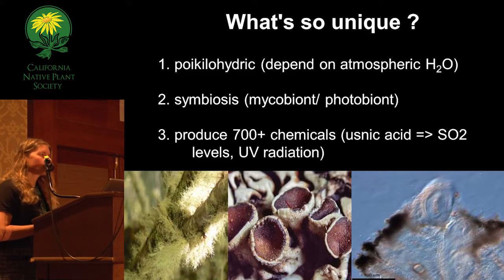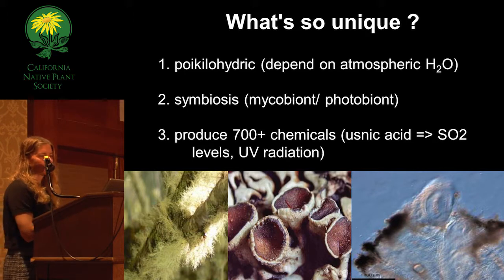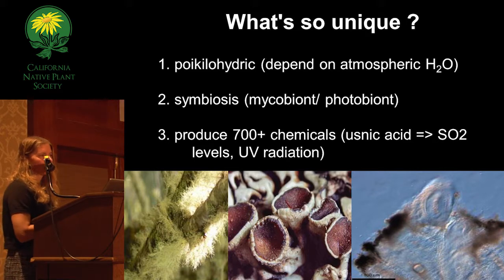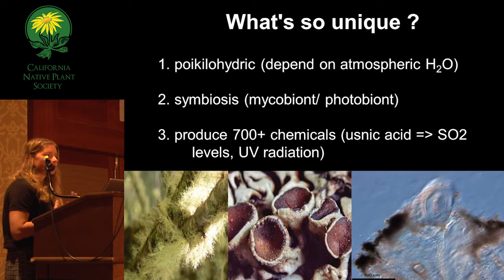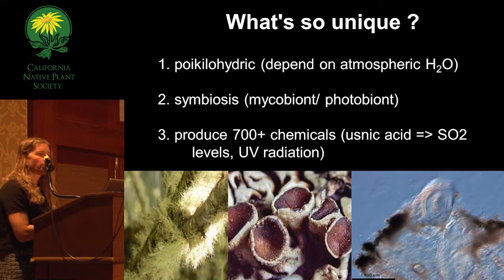What's unique about lichens compared to vascular plants? One reason is that they are poikilohydric, meaning they depend on atmospheric water and don't have stomata to regulate exchanges. They are a symbiosis between a mycobiont and photobiont. Another very unique feature is that they can produce over 700 different chemicals, only 8% of which are produced by other fungi and plants. We're still not sure of the exact functions of many of these chemicals, but so far they've been used to indicate environmental pollution and sulfur dioxide levels.